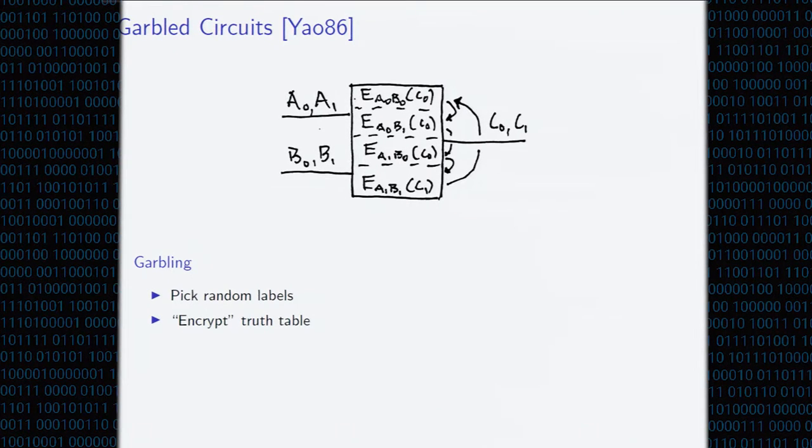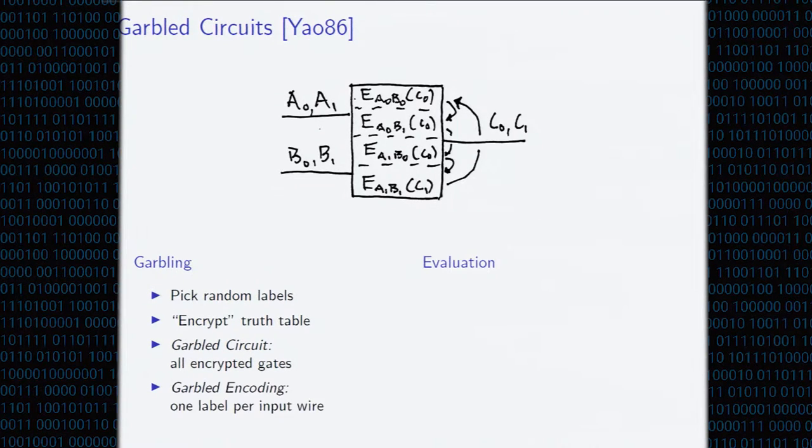We're also going to need to permute these rows of this encrypted truth table in order to hide so we don't leak any information. But I'm going to put this under the rug for the rest of this talk. A garbled circuit is going to be this collection of garbled gates. And the garbled encoding is going to be simply one label per input wire, exactly one label per input wire.